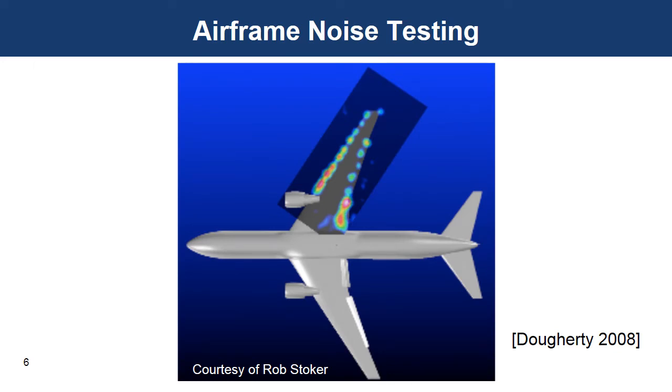The experiment was very successful, and the technique's gone on to be used in wind tunnels around the world. There's also a flyover version that was developed by DLR, principally by Ulf Mikkel. Both the flyover and the wind tunnel versions make images of airframe noise sources, like this picture from Rob Stoker. The flyover version also produces images of engine noise.